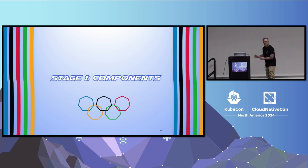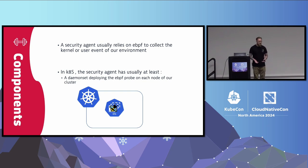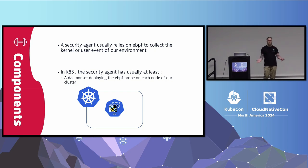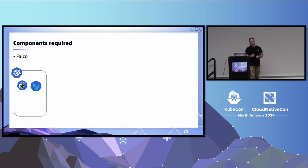Stage one: Components. Here we need to capture events that will happen in your system, usually on the kernel. The best way is to rely on eBPF agents. What we expect from a component perspective is to have a daemon set in our cluster that deploys those eBPF probes. That will be the mandatory requirement for each solution we cover. So first we have Falco. Falco has this daemon set as expected.